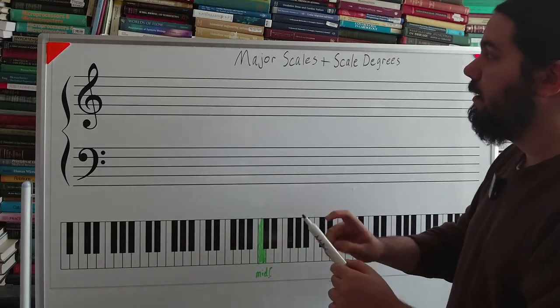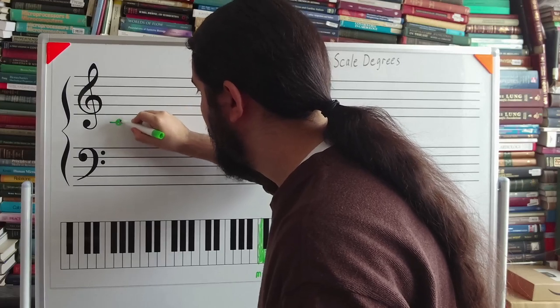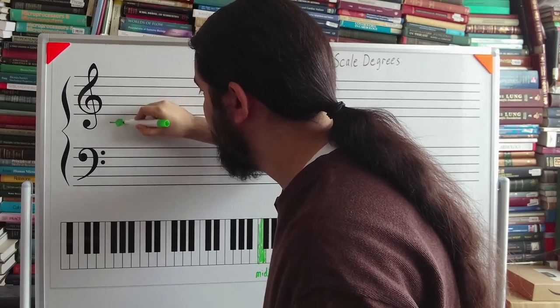Middle C on the staff looks like this. It's on the treble staff one ledger line below E.